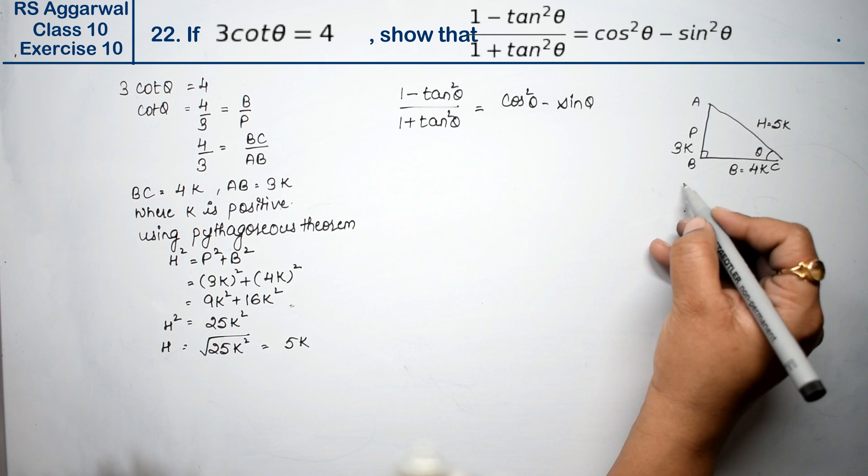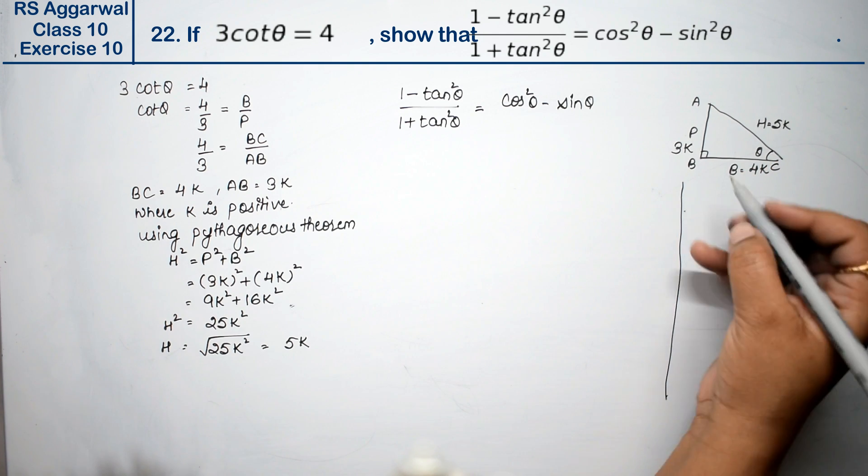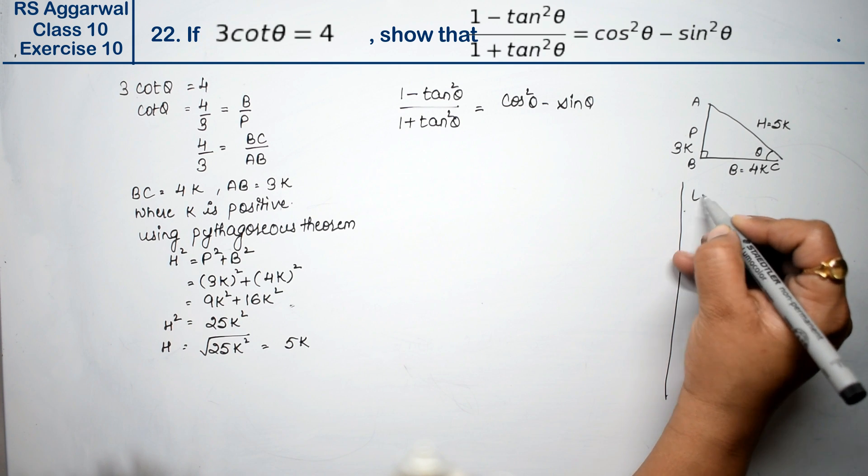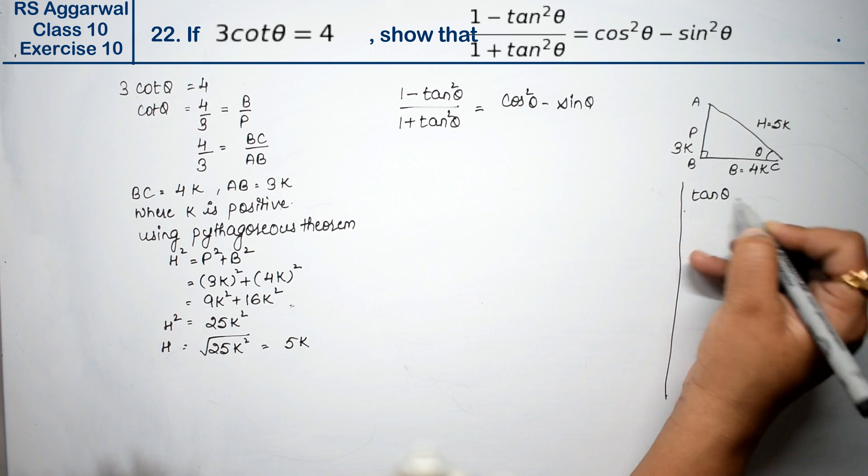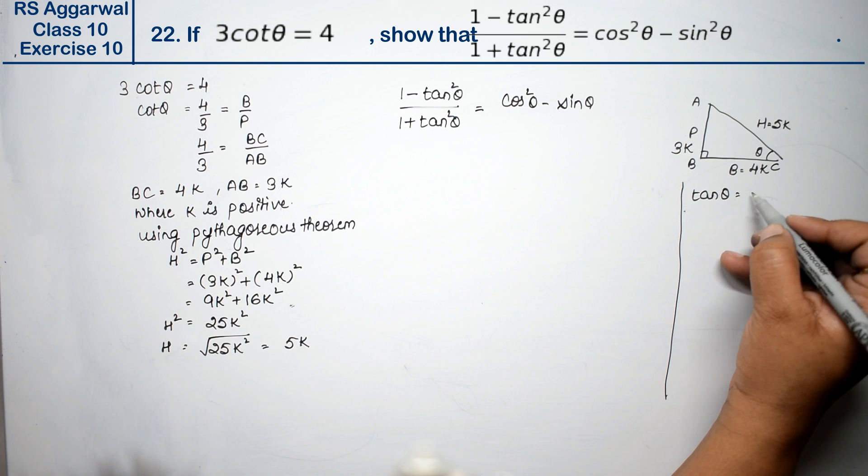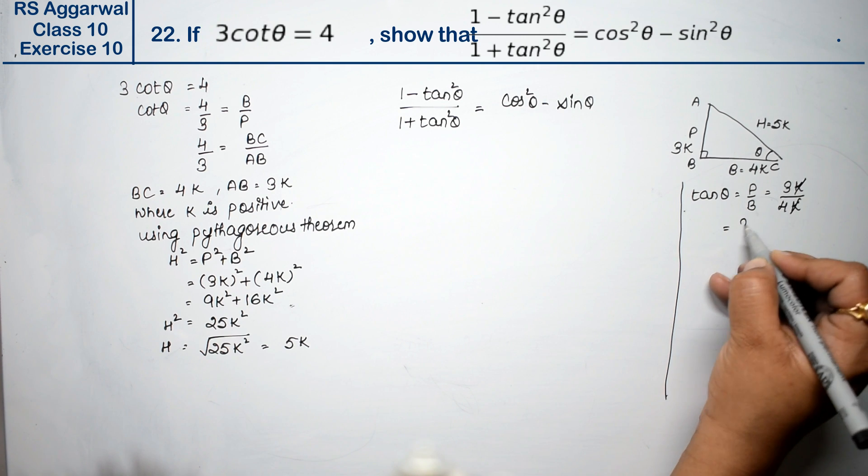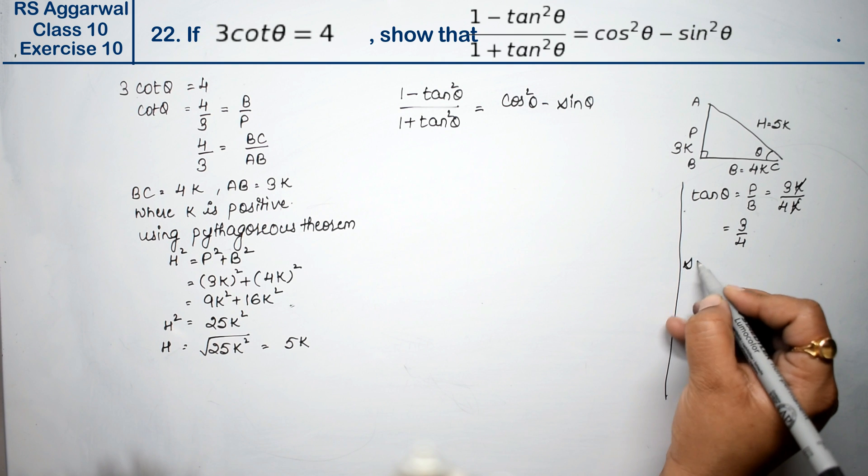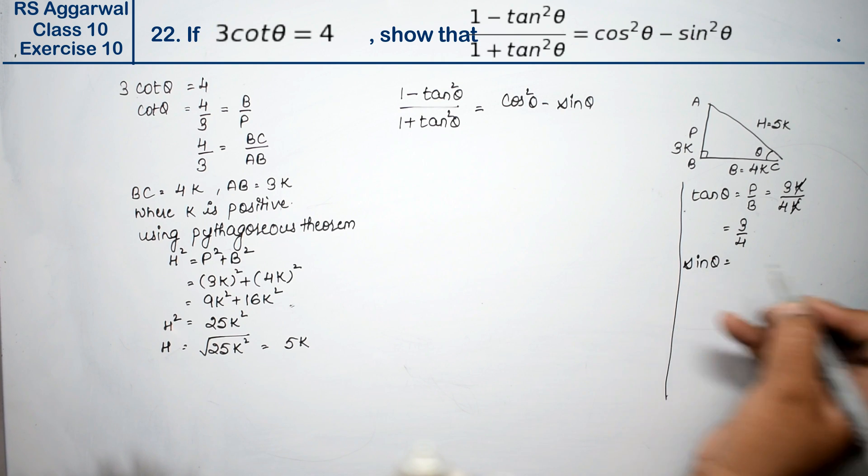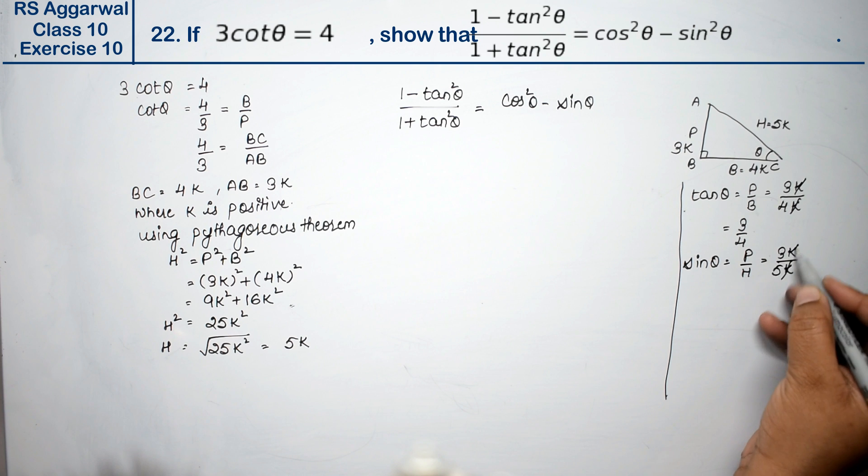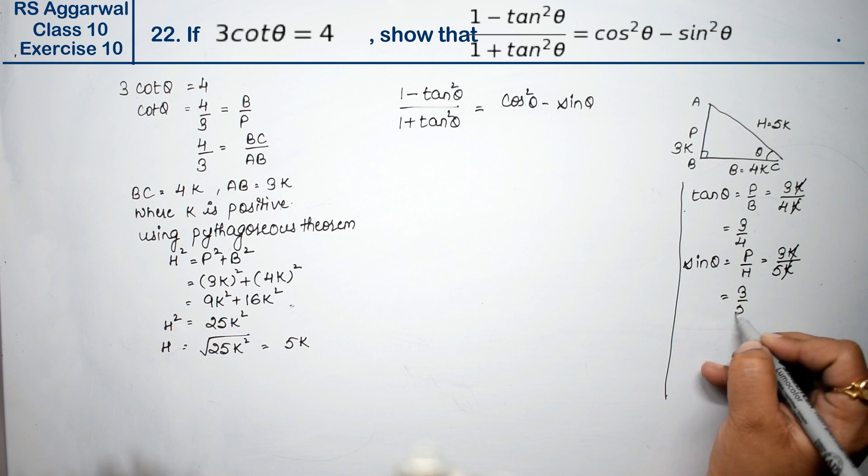h is square root of 25k², that means h is 5k because 5 times 5 is 25. Now we will find all the values. tan θ value is perpendicular upon base, which is 3k upon 4k, so k cancels and we get 3 upon 4.